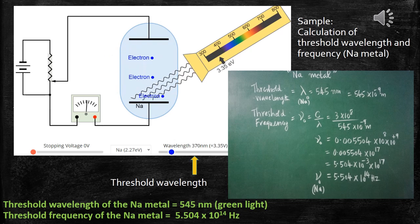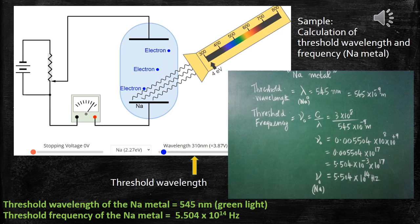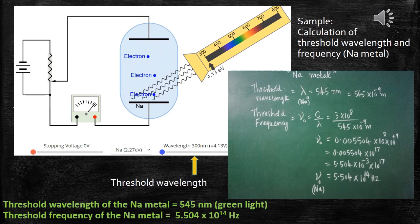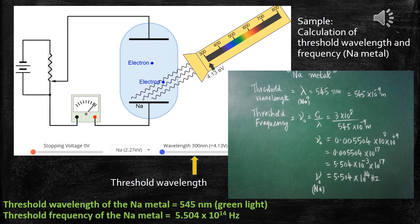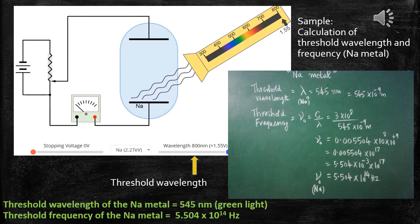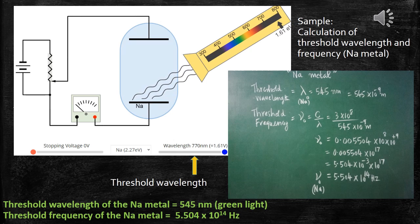With the help of the threshold wavelength value lambda naught, threshold frequency can be calculated. Threshold frequency can be calculated by the formula: nu naught is equal to c divided by lambda naught. Substituting the values of c and lambda naught, we get the threshold frequency nu naught as 5.504 into 10 to the power of 14 hertz. That is the minimum frequency required to remove the electron from the sodium metal surface.